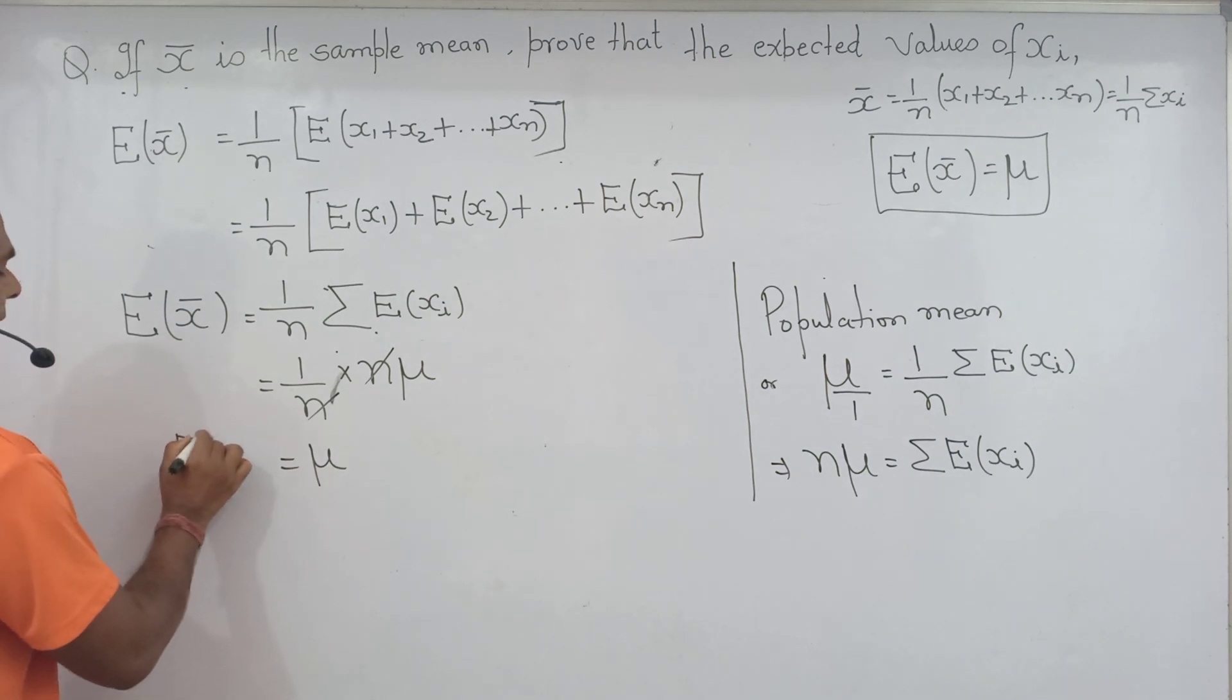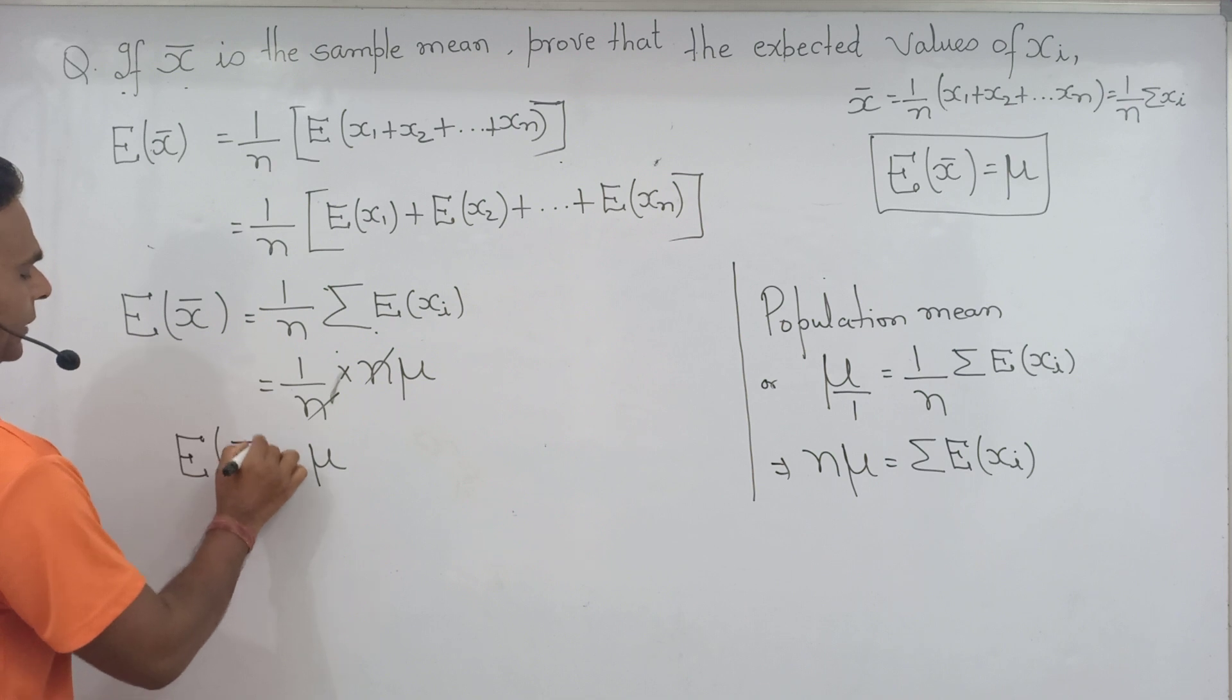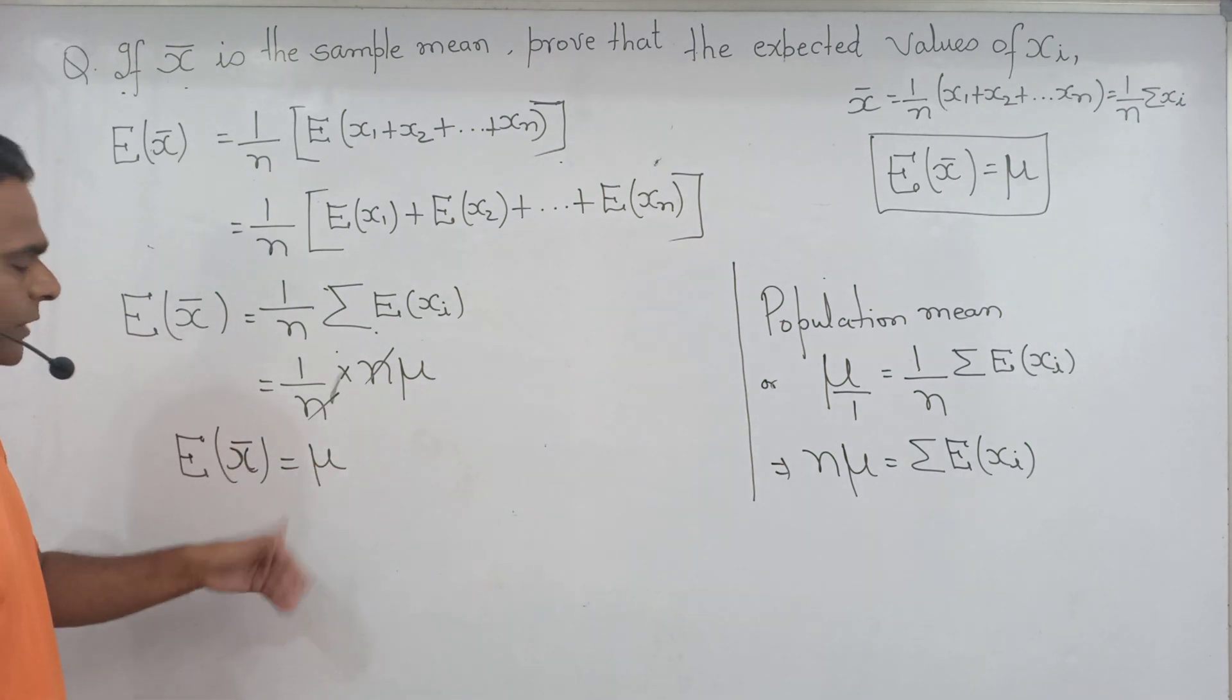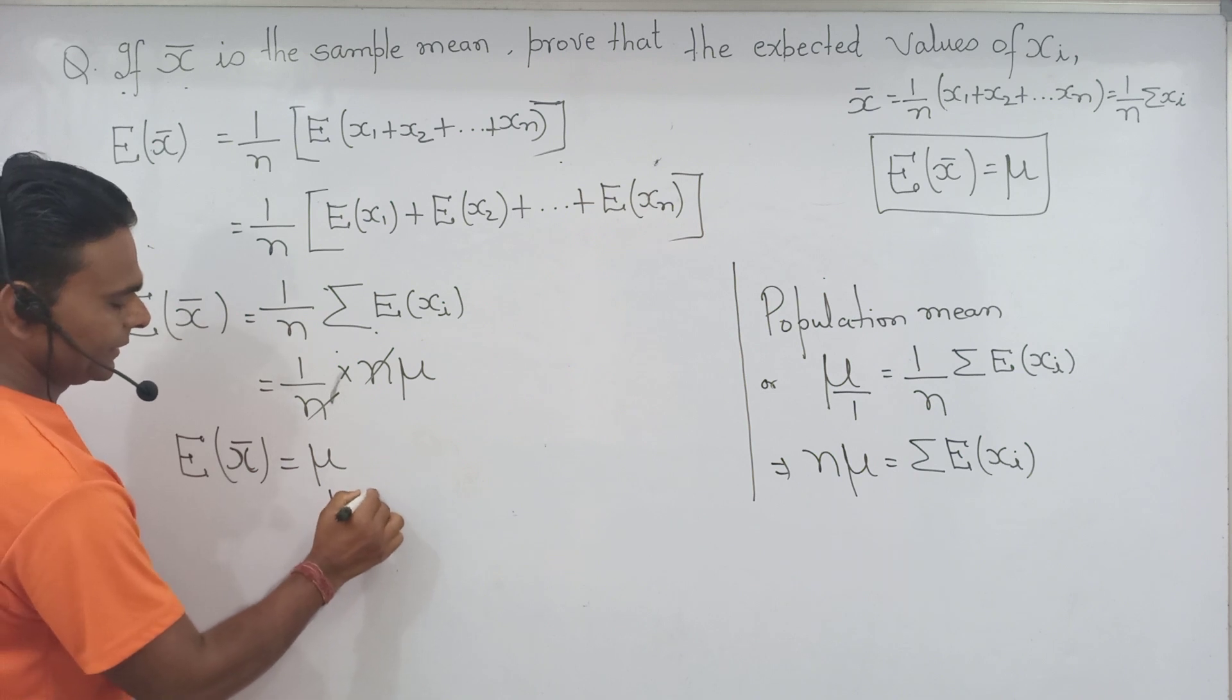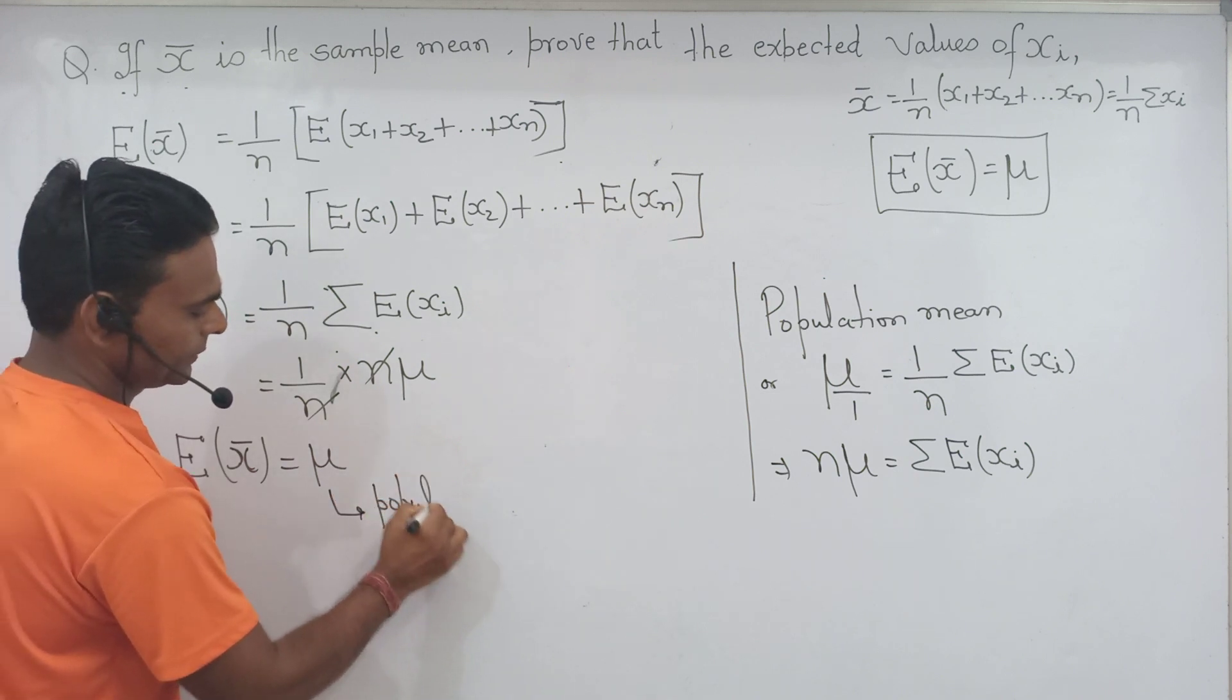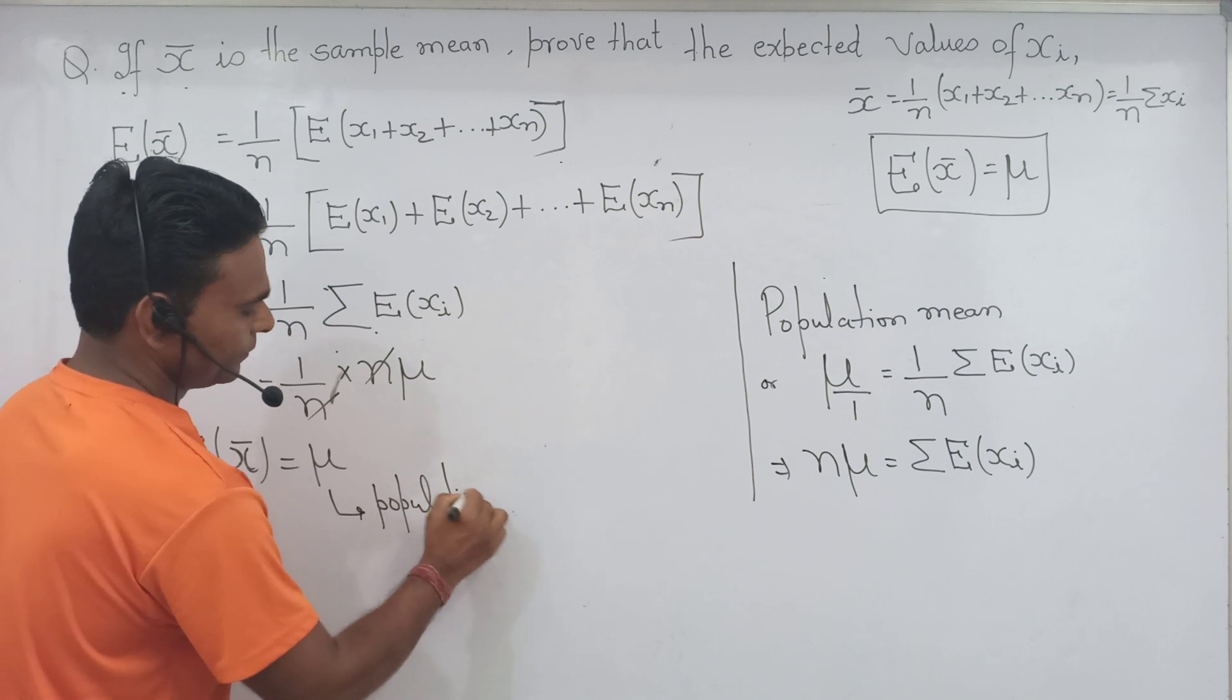To yah iska value hum logo ne nikala. Yahaan par n times μ, into n times μ, to n n cancel equal to μ. That is the expected value of mean, mean equal to population mean, that is μ.